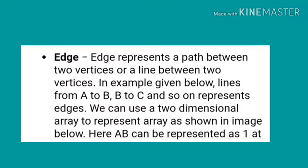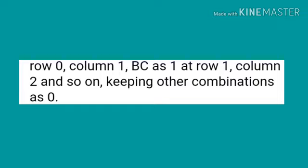Next is edge. Edge represents a path between two vertices or a line between two vertices. In the example given below, lines from A to B, B to C, and so on represents edges. We can use a two-dimensional array to represent array as shown in image below. Here, AB can be represented as 1 at row 0, column 1, BC as 1 at row 1, column 2, and so on, keeping other combinations as 0.